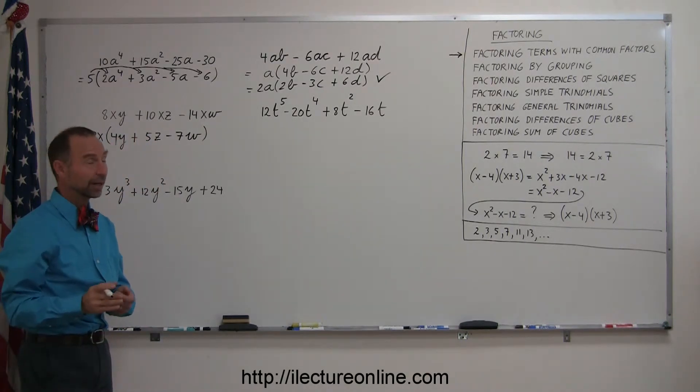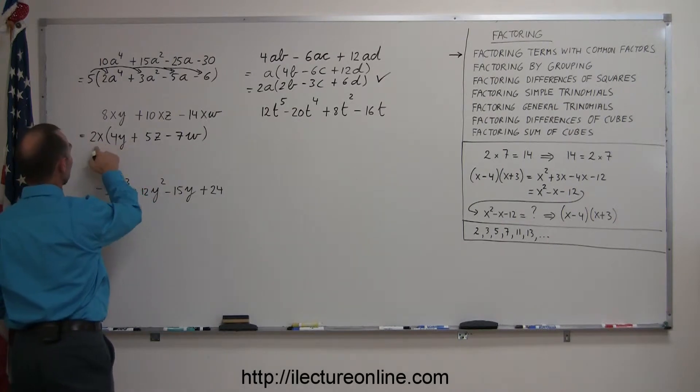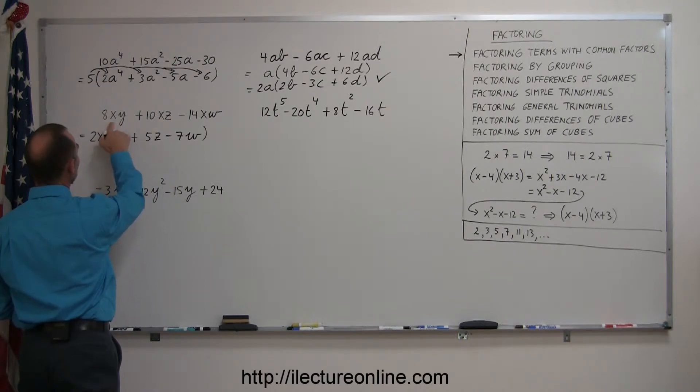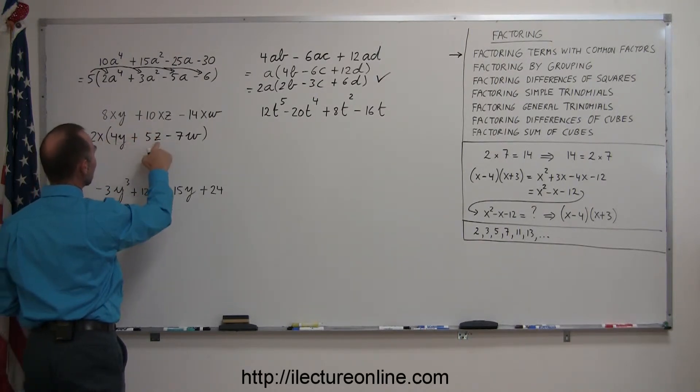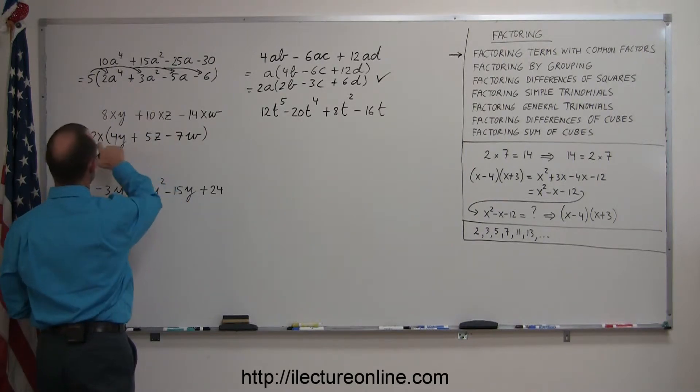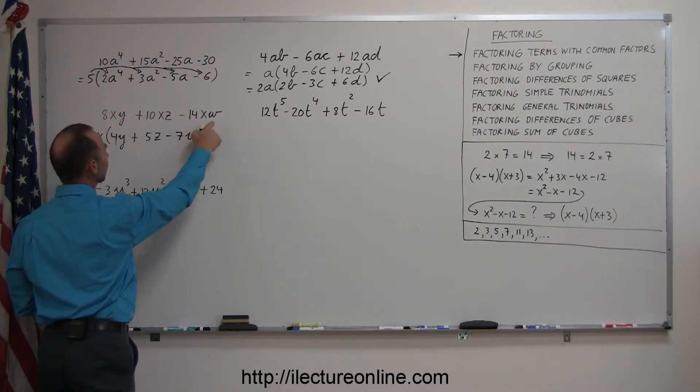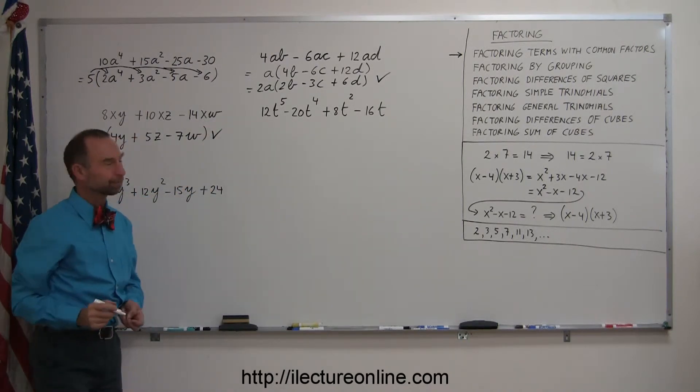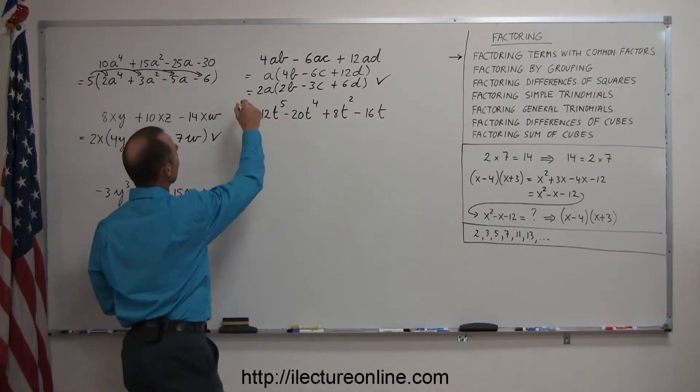Just to make sure I did it correctly, I can multiply the 2x back with each of these three terms. So, 2x times 4y is 8xy, 2x times 5z is 10xz, which is what I have, and 2x times minus 7w is minus 14xw, and so again, I did it correctly.